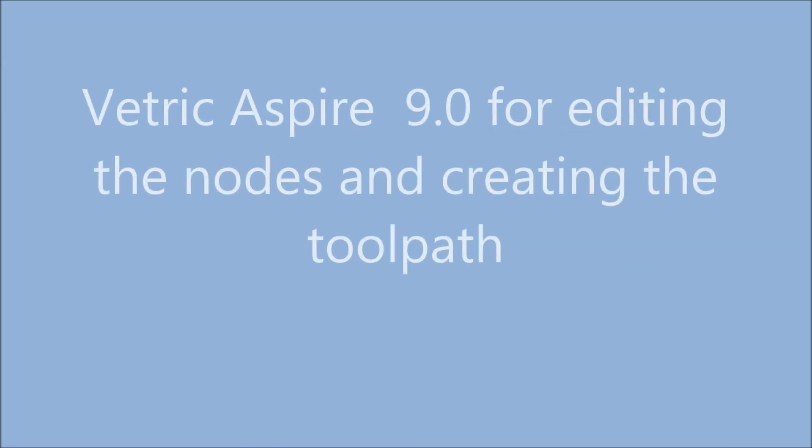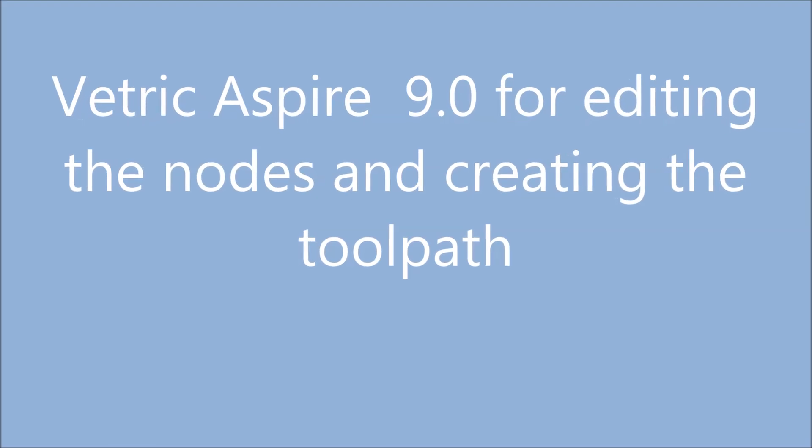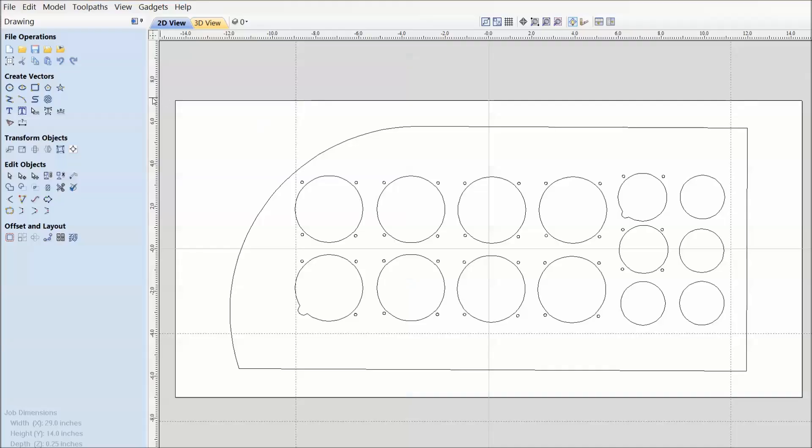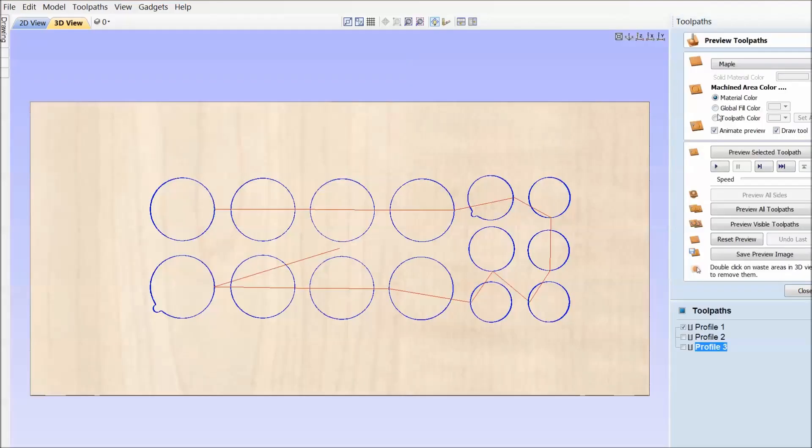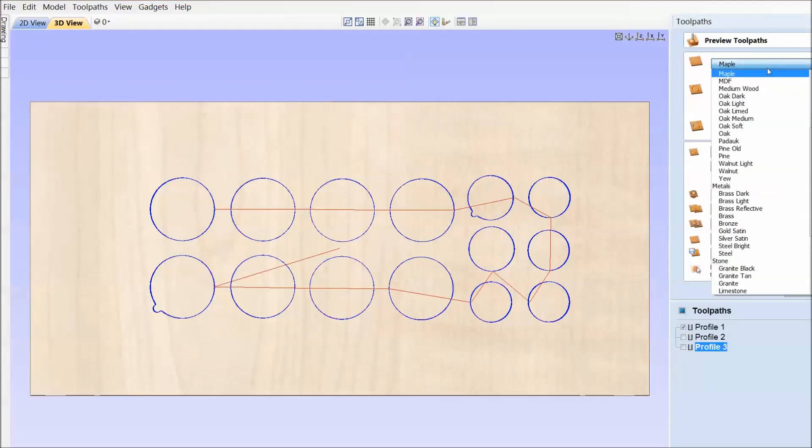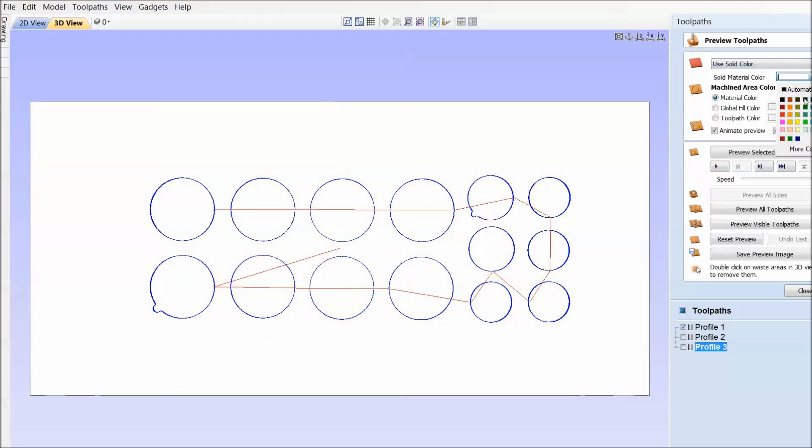So now I'm going to take that DXF file that I created, the final one, and I'm going to load it into Vectric Aspire 9.0. This is where I might do a bit of editing, a bit of cleanup. But what I did do here, that's where I made all the bolt holes for the instruments. I took the Xs out and replaced it with a .125 diameter bolt hole.